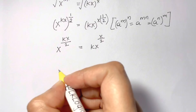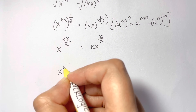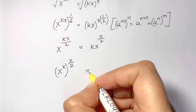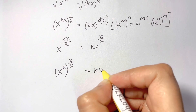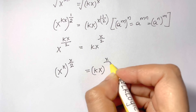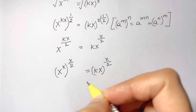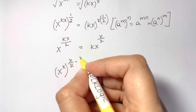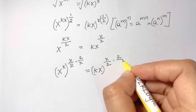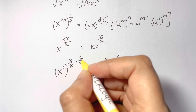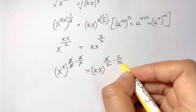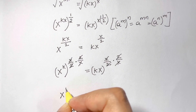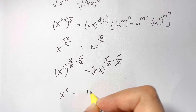We can write this as x to the power of k, whole to the power of x over 2, equals kx whole to the power of x over 2. To eliminate this exponent, we raise both sides to the power of 2 over x, cancelling x over 2. We are left with x to the power of k equals kx.